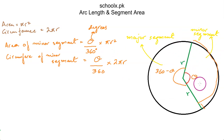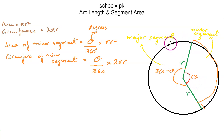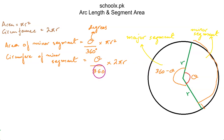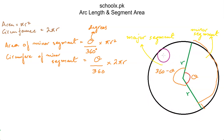To find the arc length of the major segment, we use (360° − θ)/360 × 2πr, substituting (360° − θ) in place of θ. This gives the circumference or arc length of the major segment. Both formulas are applicable only when θ is in degrees.